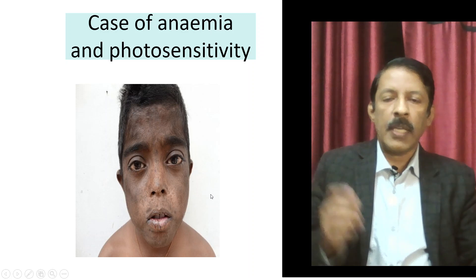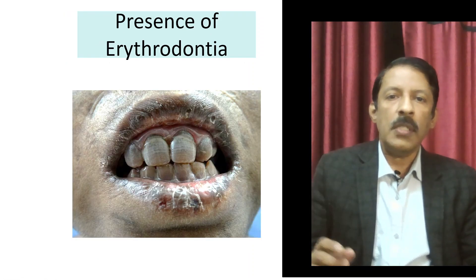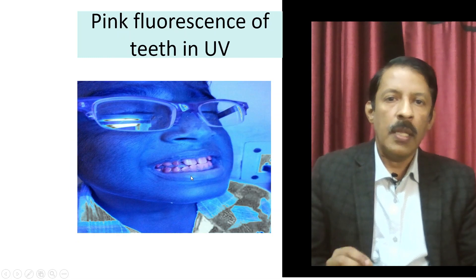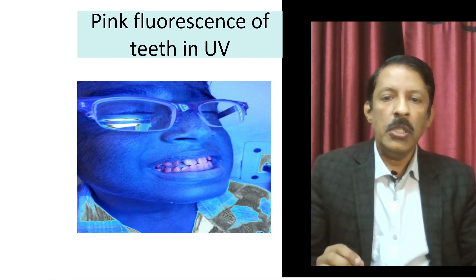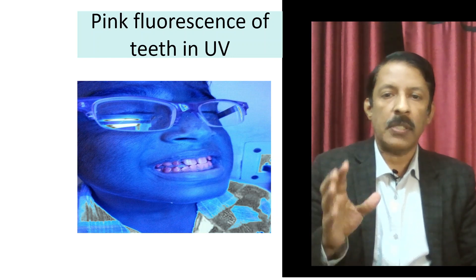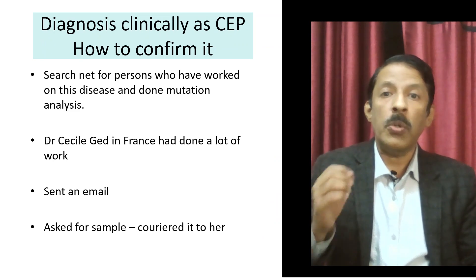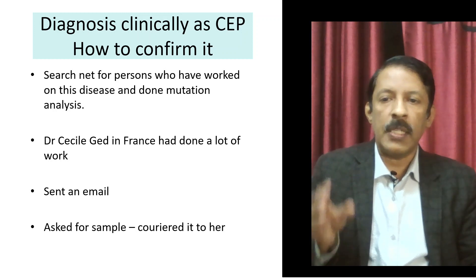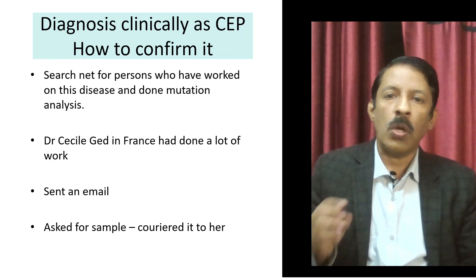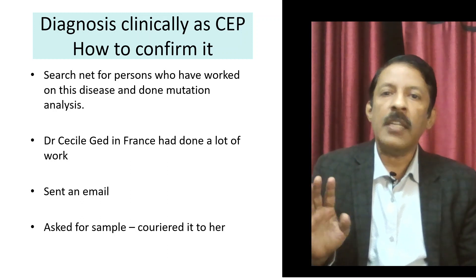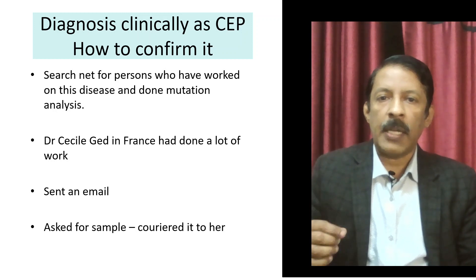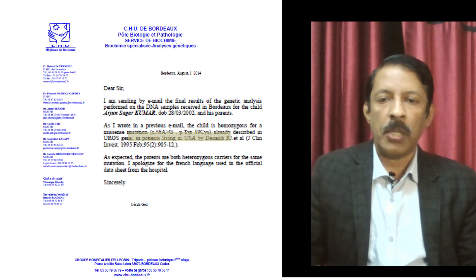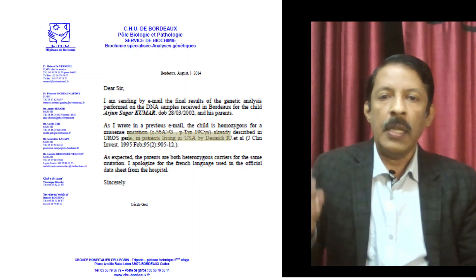This next case presented with anemia and photosensitivity. If you notice the teeth, there was a characteristic brownish discoloration all over — this is called erythrodontia. When you look at it under UV fluorescence, you can see this bright pink fluorescence. Clinically the diagnosis was confirmed, but then how do you confirm that it is congenital erythropoietic porphyria? For that we searched the net and found Dr. Cecil Gued in France who has been doing a lot of work sequencing congenital erythropoietic porphyria. We sent her a mail, she asked us to send samples, we sent the blood sample of the index child and the family, and this is the report we got: a case of congenital erythropoietic porphyria with a uroporphyrinogen synthase 1 mutation, properly annotated.